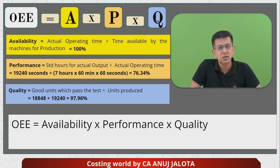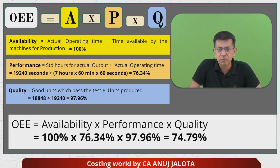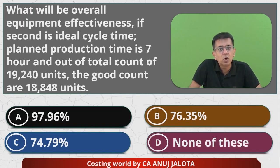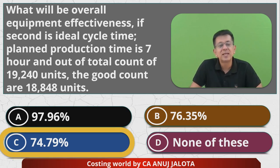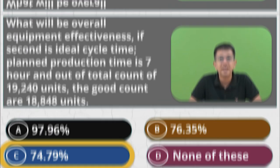Multiply all of them to arrive at OEE: 100% × 76.34% × 97.96% = 74.79%. So the correct answer is option C — 74.79%. Good work if that was your answer! I'll see you next time with another question. Till then, happy learning. Bye, take care.